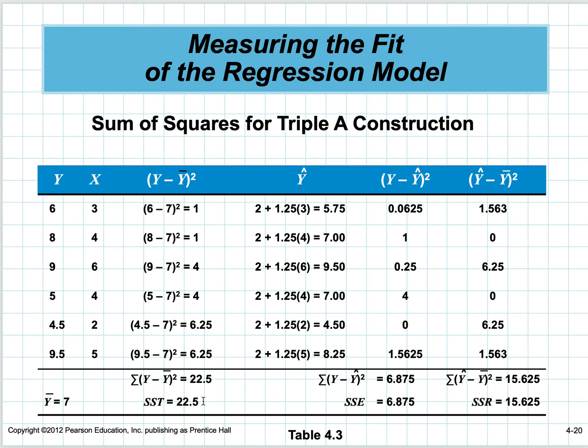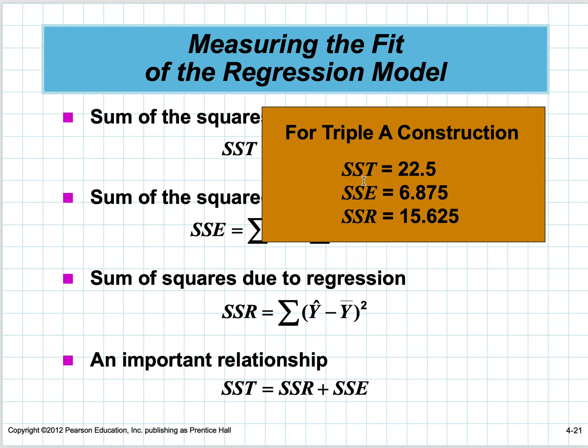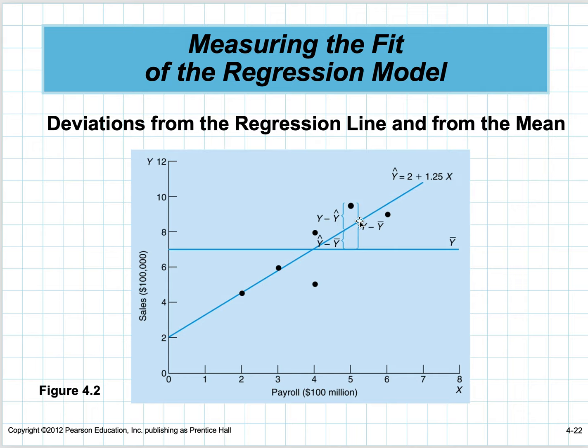Here are the sums of squared values for Triple A Construction: sum of squared total = 22.5, SSE = 6.8, SSR = 15.625. Here's the original graph with the regression line at 2 plus 1.25x and the y-bar line.